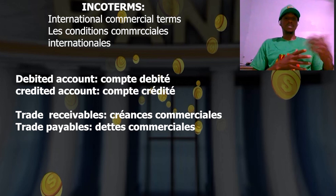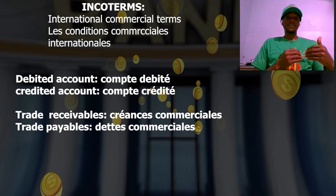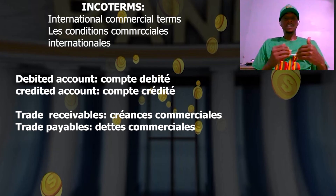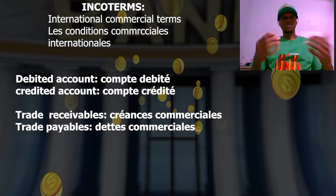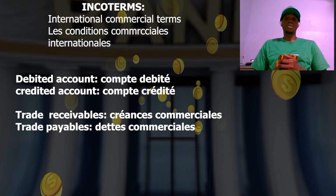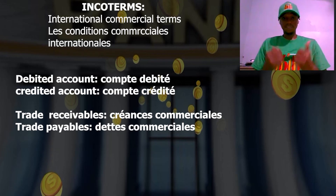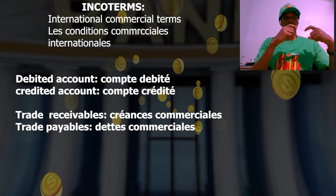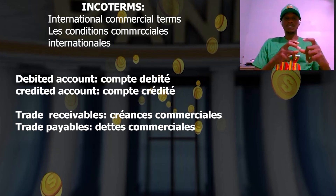On peut parler de compte débité ou compte crédité. En anglais, si on dit compte débité, ça veut dire «debited account». Si on dit compte crédité, ça veut dire «credited account». Le compte débité, c'est quand tu déposes de l'argent dans ton compte ou tu as reçu de l'argent dans ton compte à travers une autre transaction, un transfert. L'argent qui vient dans ton compte valide l'état de ton compte débité, c'est-à-dire le compte est débité.